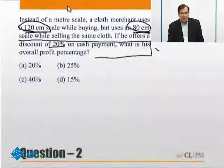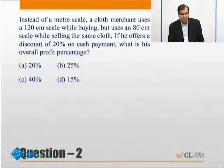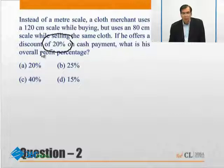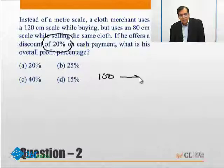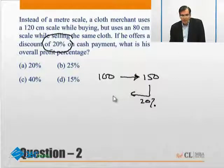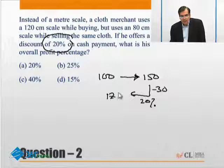But what happens in this question? There is a discount of 20 percent on cash payment. If the cost for the shopkeeper is 100, he has got a 50 percent profit, so he sells it at 150 rupees, and then he gives a discount of 20 percent on cash payment. 20 percent of 150 is 30 rupees discount, so minus 30 leaves 120. The net profit is 20 percent.